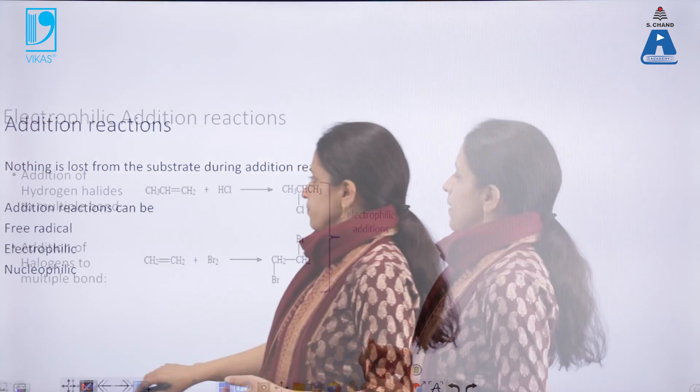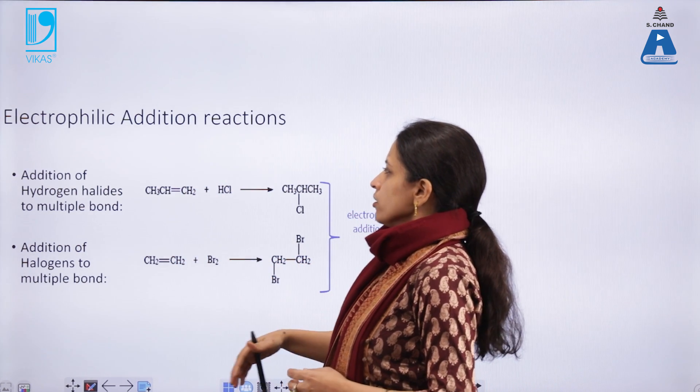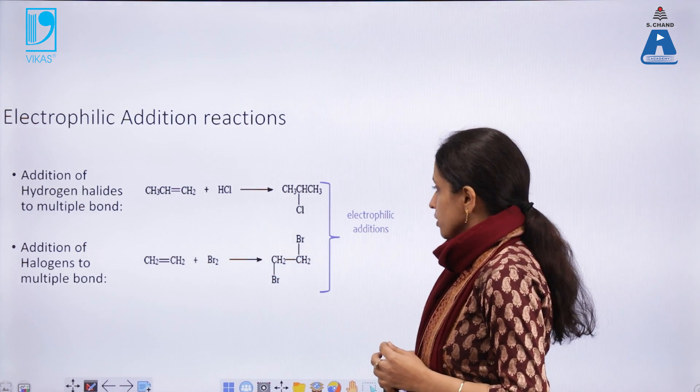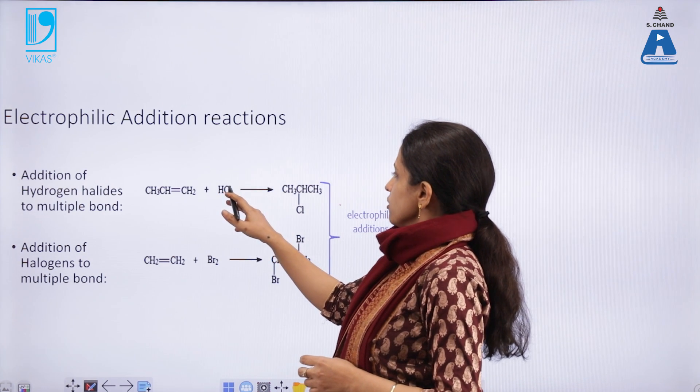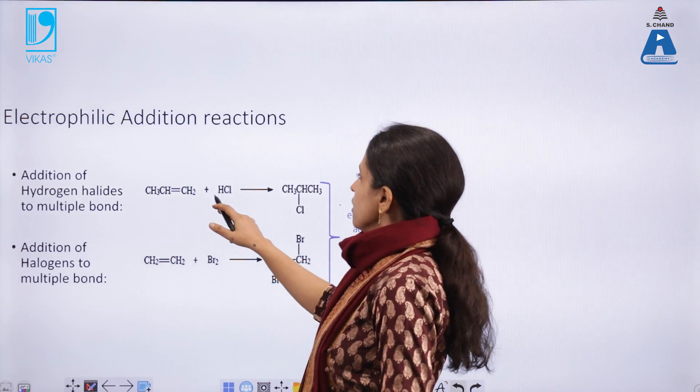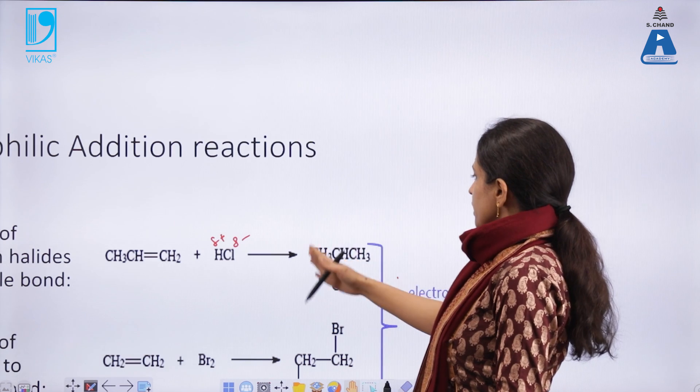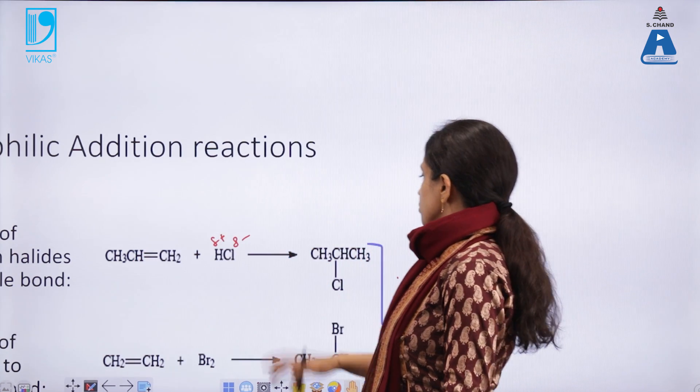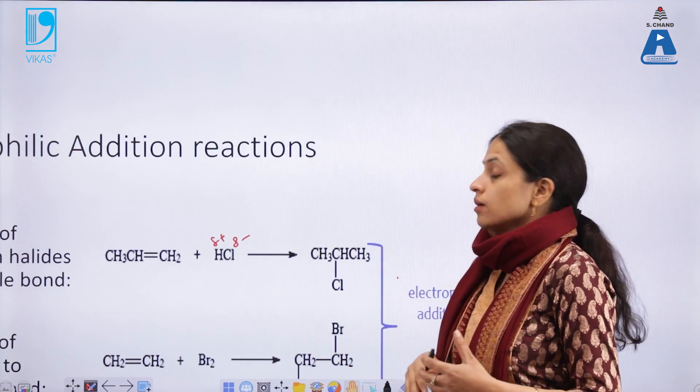Electrophilic addition reactions happen usually on a multiple bond, say a double bond or a triple bond. The most common type of addition reactions are the addition of hydrogen halides to the multiple bond or the addition of halogens. In both cases, the negative part of the attacking species and the positive part are added to the double bond. Here, HCl is added to propene. The positive part of the attacking species, H+, is getting attached to the more substituted carbon, whereas the negative part is getting attached to the less substituted carbon atom. This is governed by Markovnikov's rule.